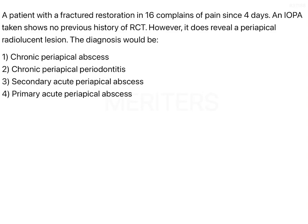The question involves a patient with a fractured restoration in tooth 1-6, which is the upper right first molar. The patient complains of pain since four days, and an IOPA taken shows no previous history of RCT. This could mean the patient had a caries lesion, and on excavation it was noticed there was no pulpal exposure, so the entire cavity was restored with either an amalgam or composite restoration.